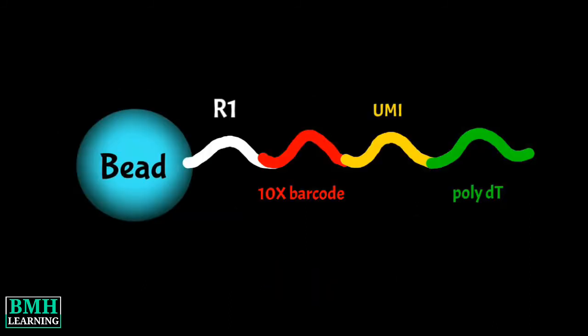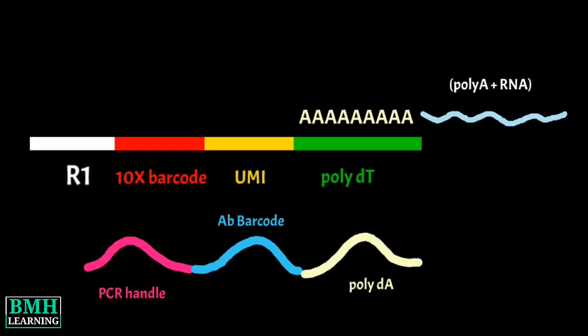The beads are coated with oligonucleotides containing a 30-terminal deoxythiamine stretch or DT stretch. This coating captures the polyadenylated mRNA content produced when the nuclei are lysed inside the droplets.